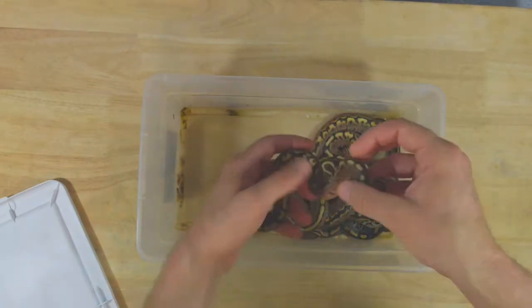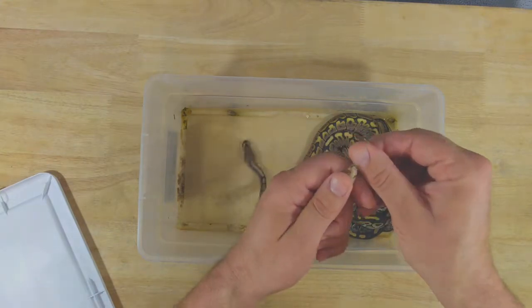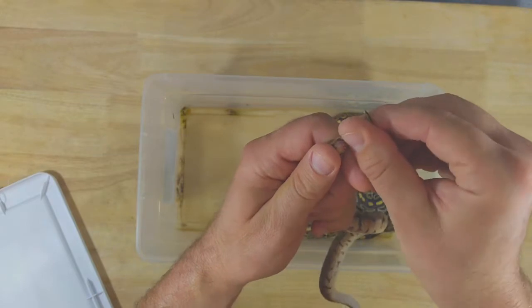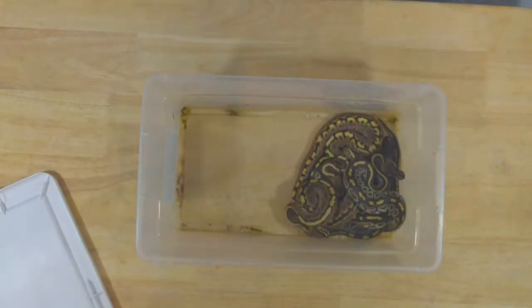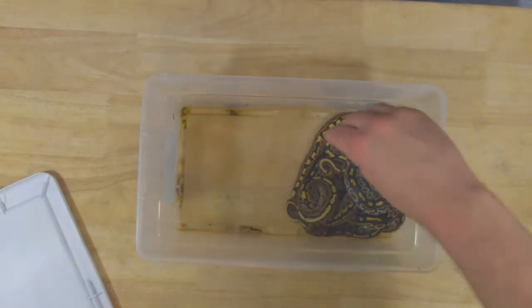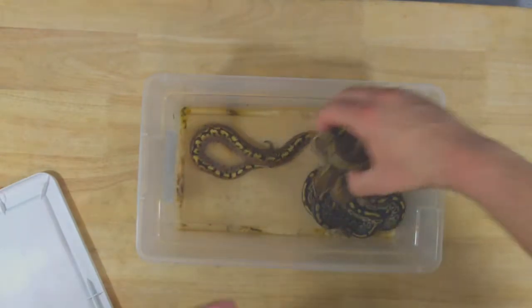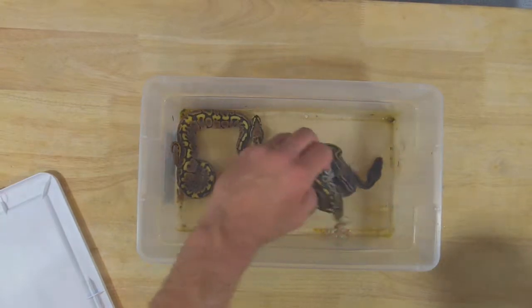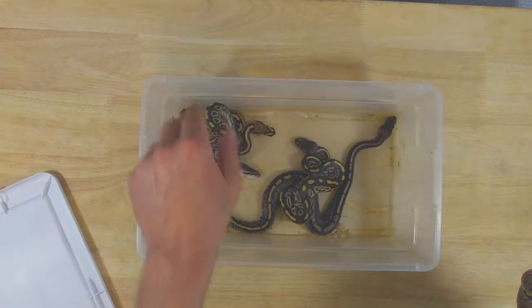Alright, I believe, see what this is. I didn't sex these yet. Male. See if you can see that, little hemipenes there. Alright, so this is a male. I'll grab some of these other ones out. I did not hit a single normal. Every single snake in here is a Red Head combination.